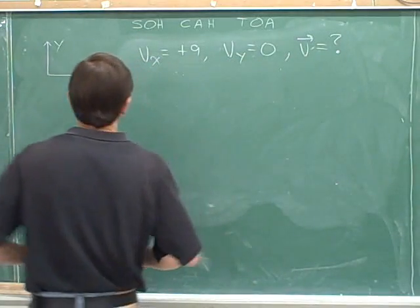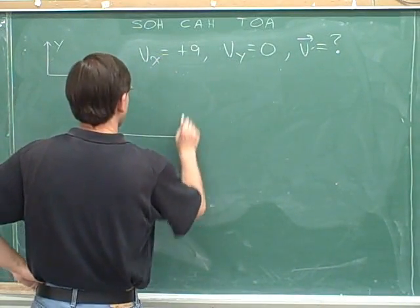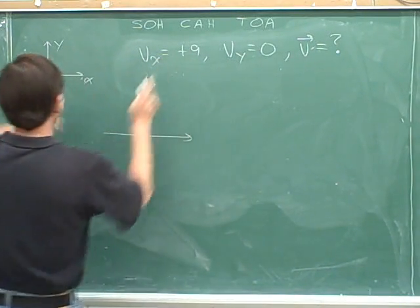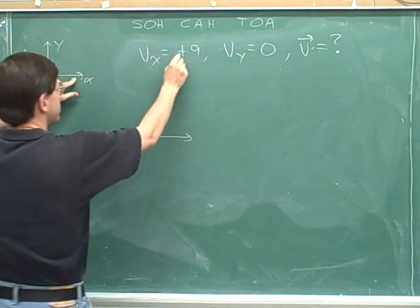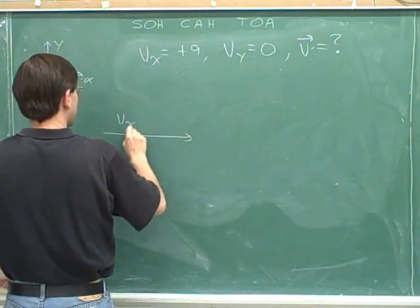We can draw a picture. We can draw the x component. We know it's pointing to the right, because right is positive and this is a positive component.